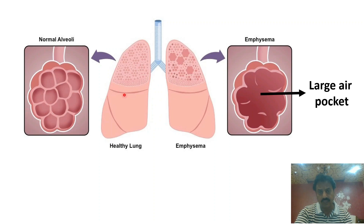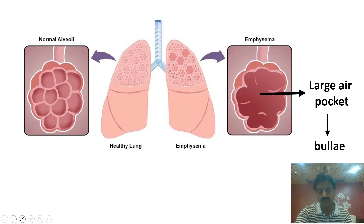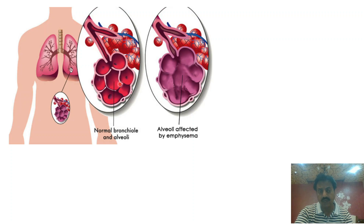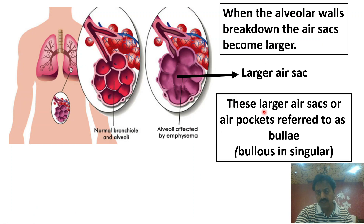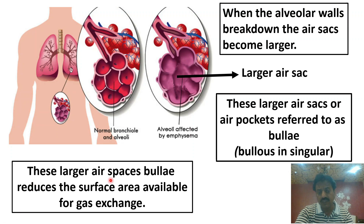Here you can see the enlarged pockets — enlarged air sacs — forming larger air pockets. When the alveolar walls break down, the air sacs become larger. These larger air sacs or air pockets are referred to as 'blebs' in plural and 'bleb' in singular. These larger air spaces reduce the surface area available for gaseous exchange.